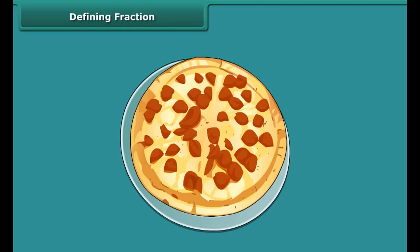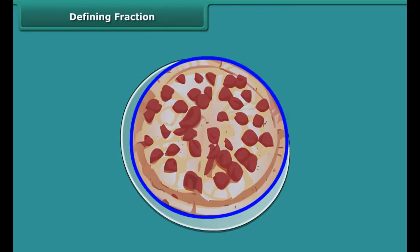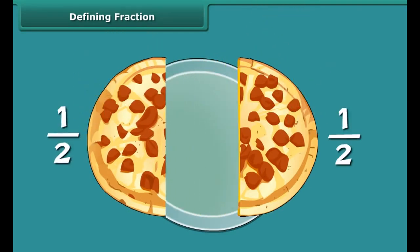1 upon 2 means that one whole thing is divided into two equal parts and one part out of these two parts is taken. For example, Ravi divides a pizza into two parts.